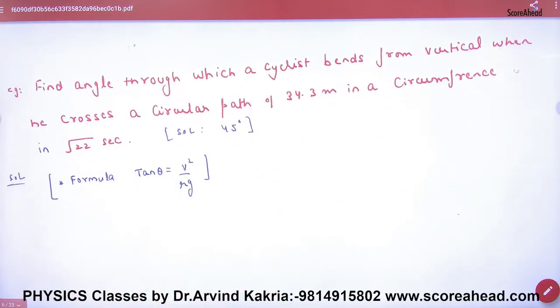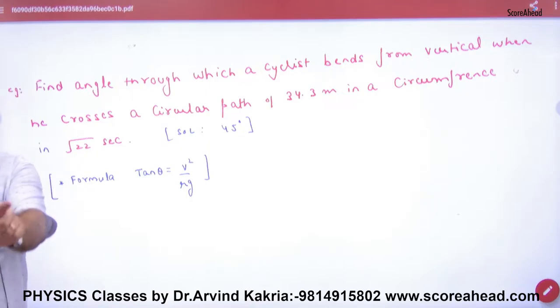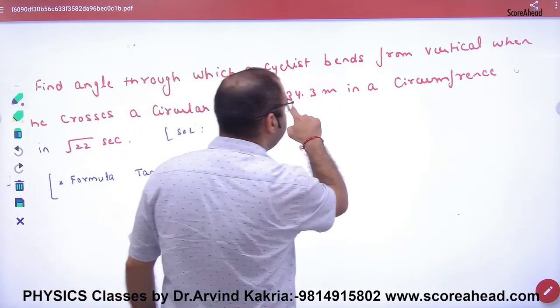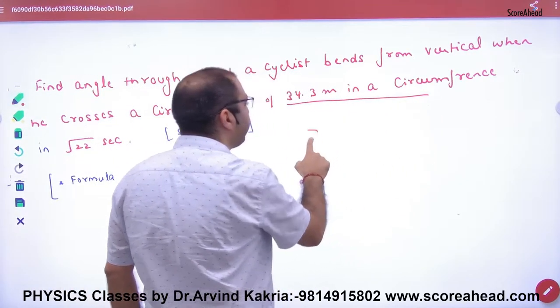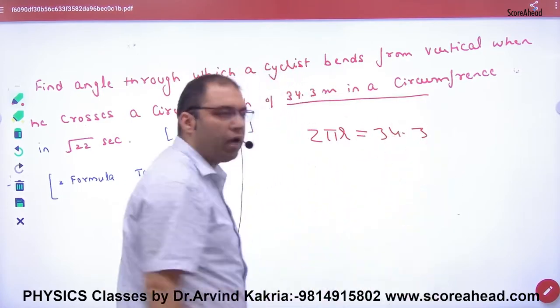Next, find angle through which a cyclist bends. Which topic is this? Bending of cyclists. And what is given? Circular path of 34.3 circumference. Circumference means what is given? 2 pi r. What is step clear?